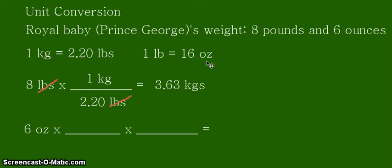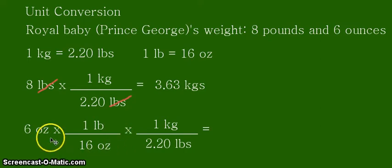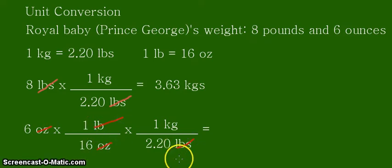To convert 6 ounces into kilograms, we use the conversion factor 1 pound equals 16 ounces first, then from pounds to kilograms using the second conversion factor. I have now placed the conversion factors in their proper positions. The units should be properly placed for you to see the cancellation. Starting with ounces, the ounces cancel out, then the pounds cancel out, leaving only kilograms.